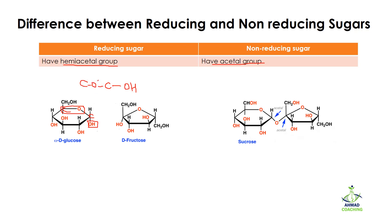If this kind of arrangement is present in any sugar, it means that sugar is going to be a reducing sugar. In fructose, we can see one OH group and one OC or OR group present, so the hemiacetal group is present. Similarly, glucose also has the hemiacetal group, making both of them reducing sugars.